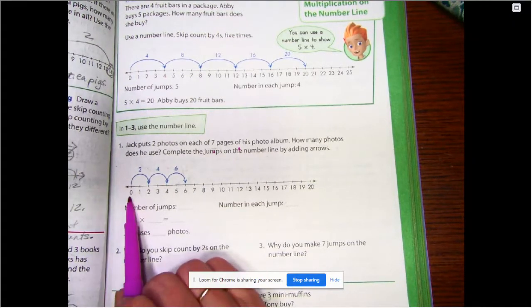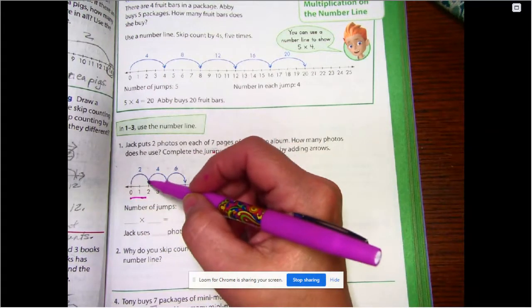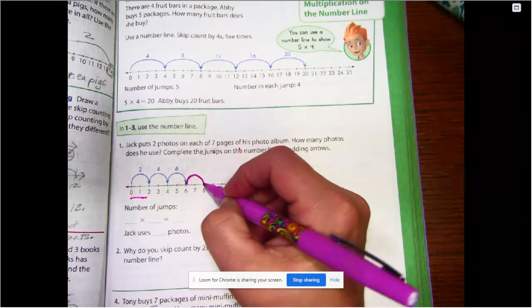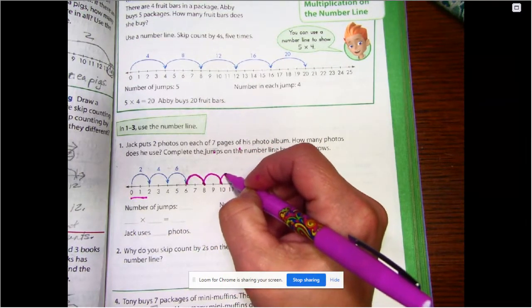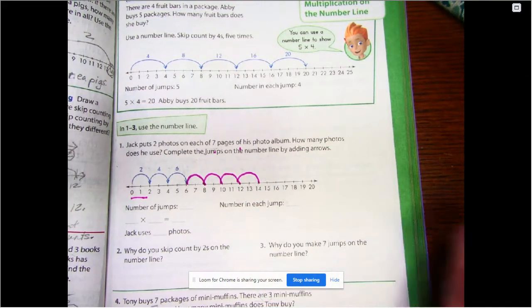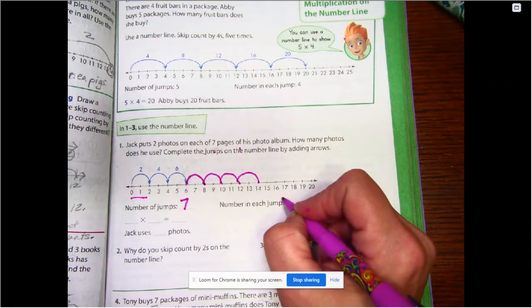Complete the jumps on the number line by adding arrows. Looks to me like they're doing jumps of two. So we have seven pages. So we have 1, 2, 3, 4, 5, 6, 7. All right, so how many jumps did we do? Seven jumps. How big were the jumps?